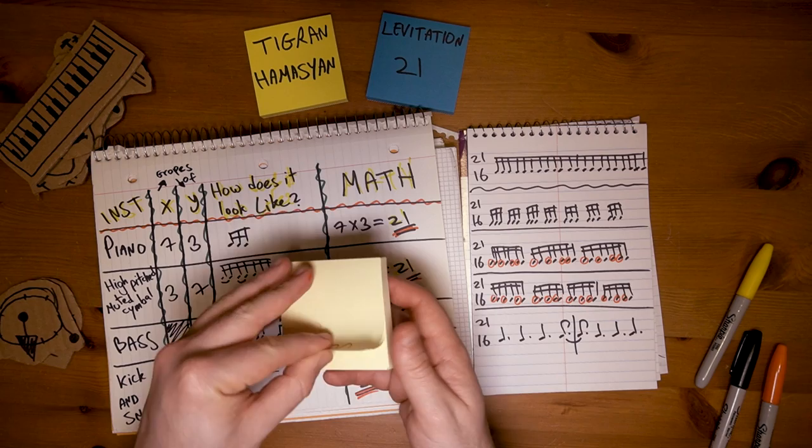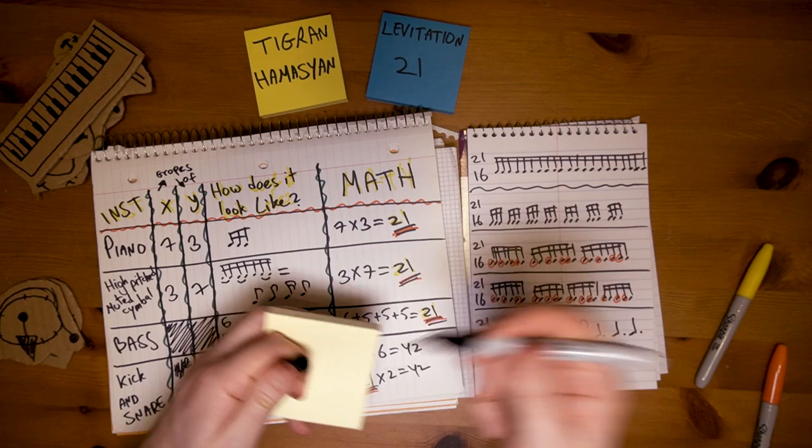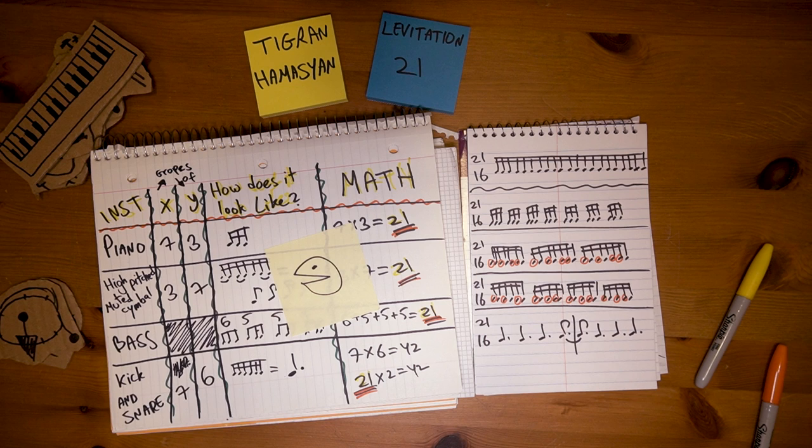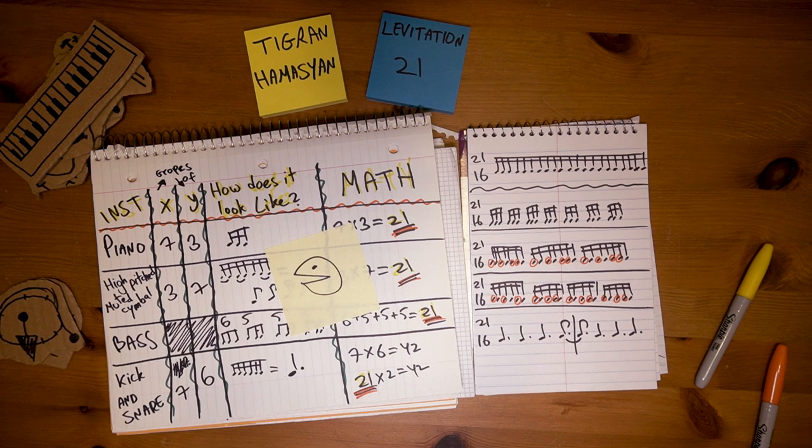So we have 4 different ways of expressing that 21/16 bar, played simultaneously. On any regular given day, I'd say there's no way to make this musical. But this is where Tigran and his bandmates Artur Hnatek and Evan Marien show us how amazing musicians they are. Making this sound so fluid and musical is quite a challenge. And they nailed it.